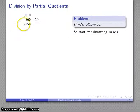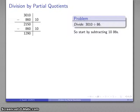I can subtract another 860 and that's another 10. Third time's the charm. I can subtract 860 one more time and I am left with 430.